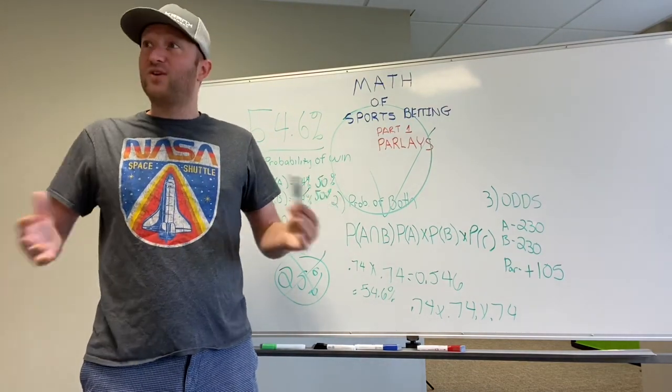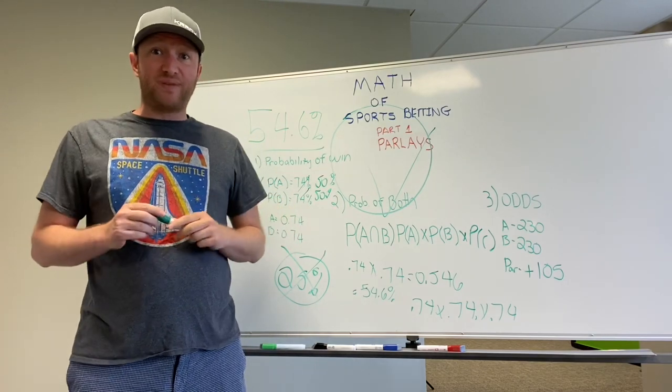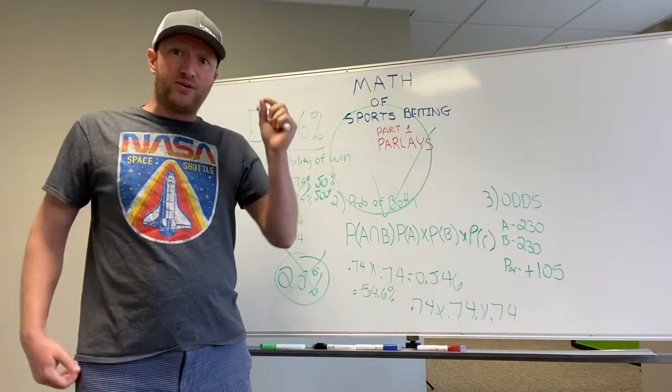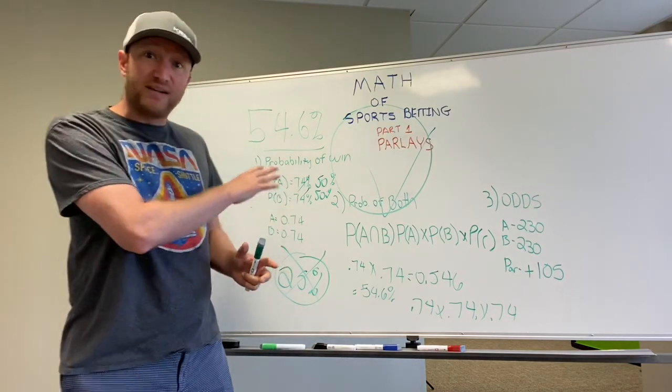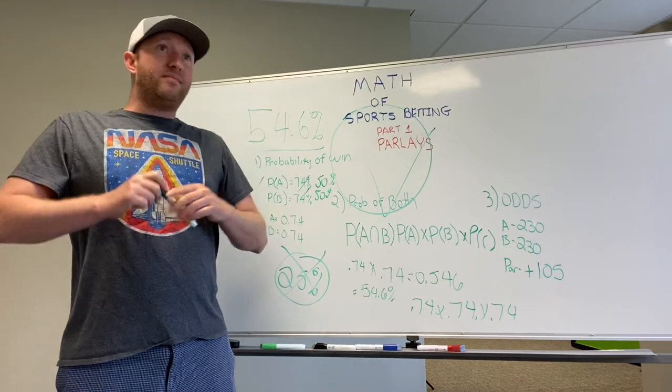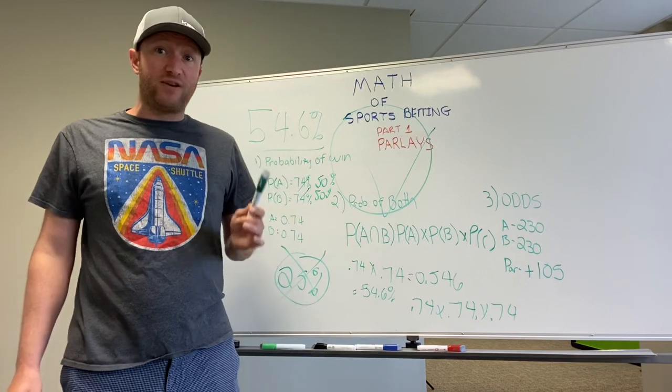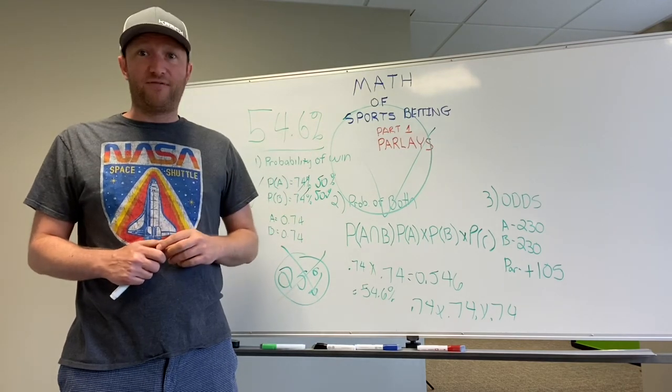You can play with the math, the formula again very simple for determining it. If you want to do it, I'm not recommending when you start to get up into three team parlays, it is very difficult to find value there. But if you want to determine probability of a three team parlay, how do we do that? Very simple. Another times. We would basically go 0.74 times 0.74 times 0.74.